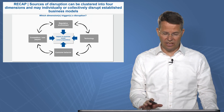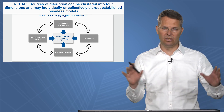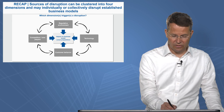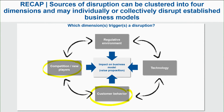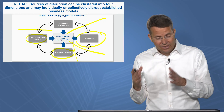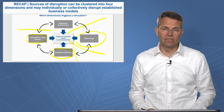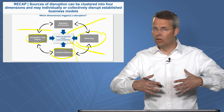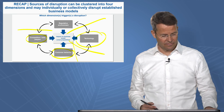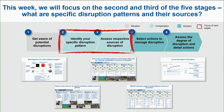Remember the dimensions — these were the four dimensions we structured last week. The first dimension is competition, the second is customer behavior, which is more the market side. Then we have technology, and we have regulation as a driver of change. Sometimes it's not only one influence impacting your business model — it can come from more than one or all dimensions together.